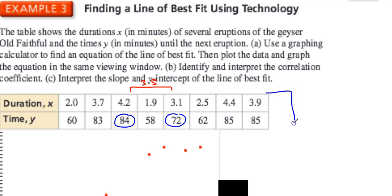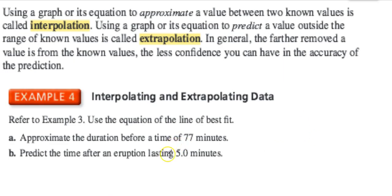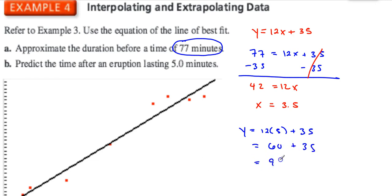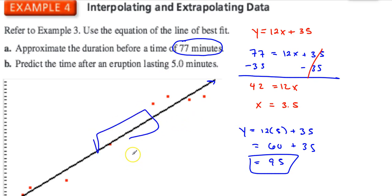Now what happens if we want to go outside our data set? That's extrapolation. Part B: predict the time after an eruption lasting 5.0 minutes. Using our equation: y = 12 times 5 plus 35. 12 times 5 is 60, plus 35 gives a duration of 95 minutes. The basic point is to get your equation, get your line, and be able to find other data that was not collected — future data, data between your known points, and so forth.